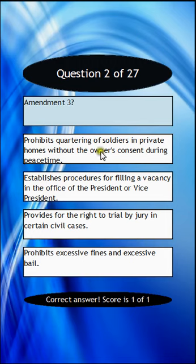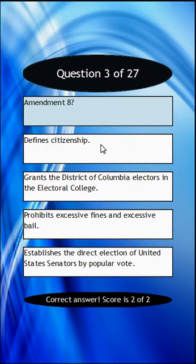Amendment 8: Is it defined citizenship? Or grants the District of Columbia electors in the electoral college? Or prohibits excessive fines and excessive bail? Or establishes the direct election of the United States Senate by popular vote?